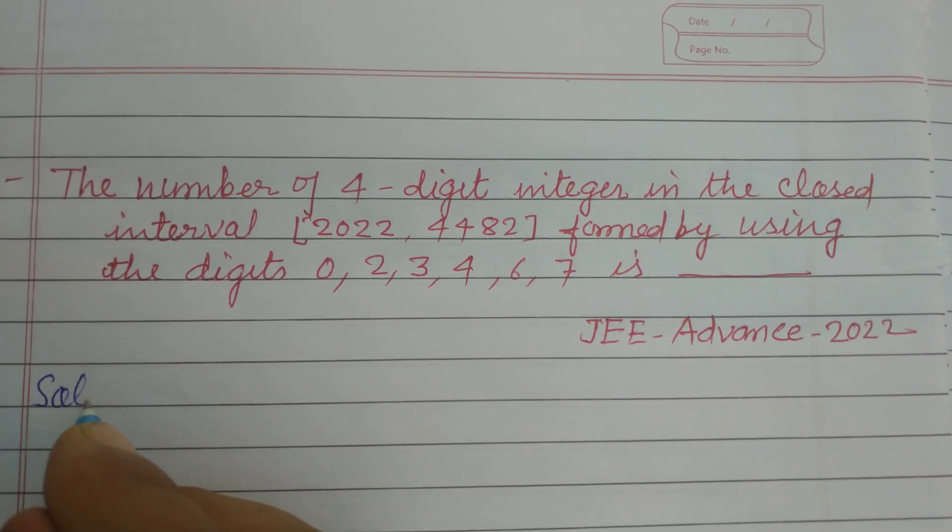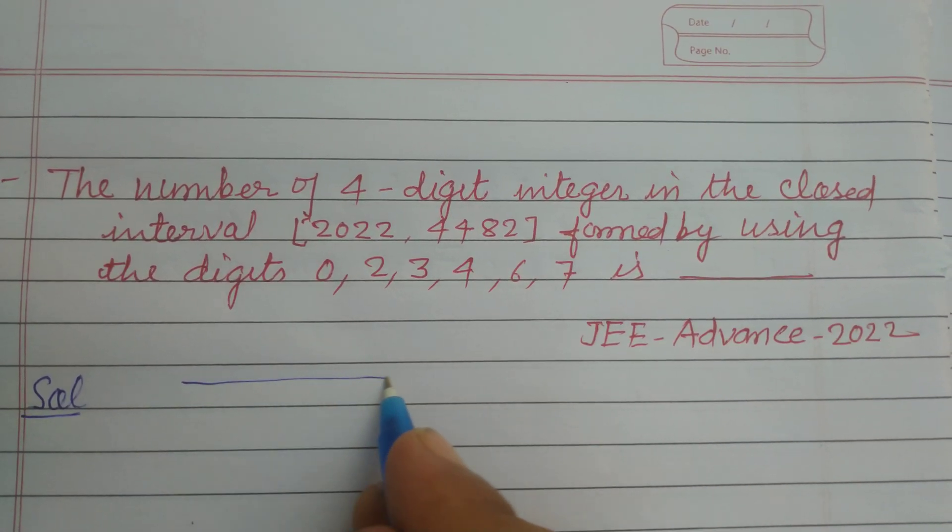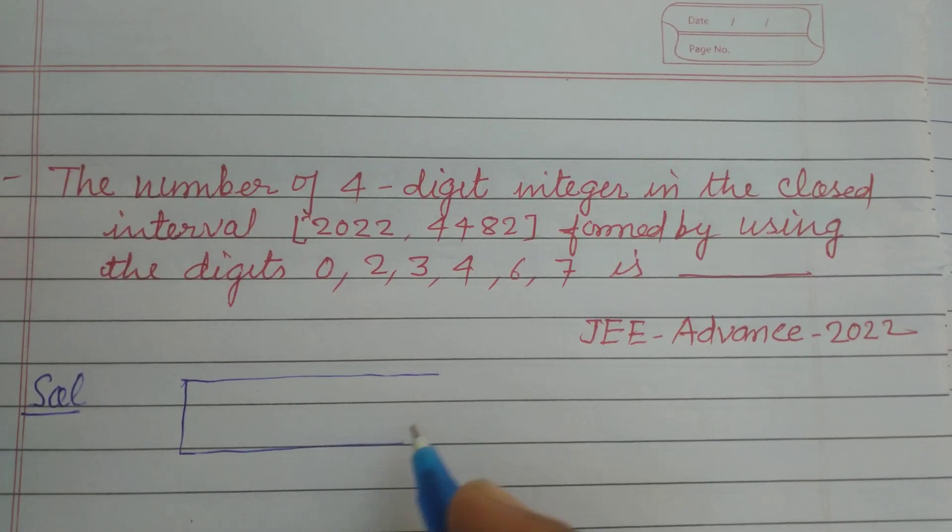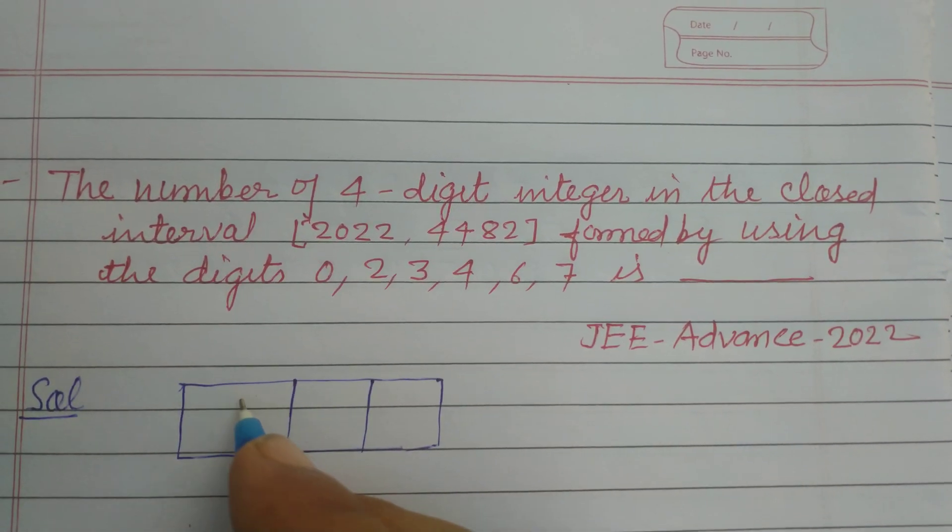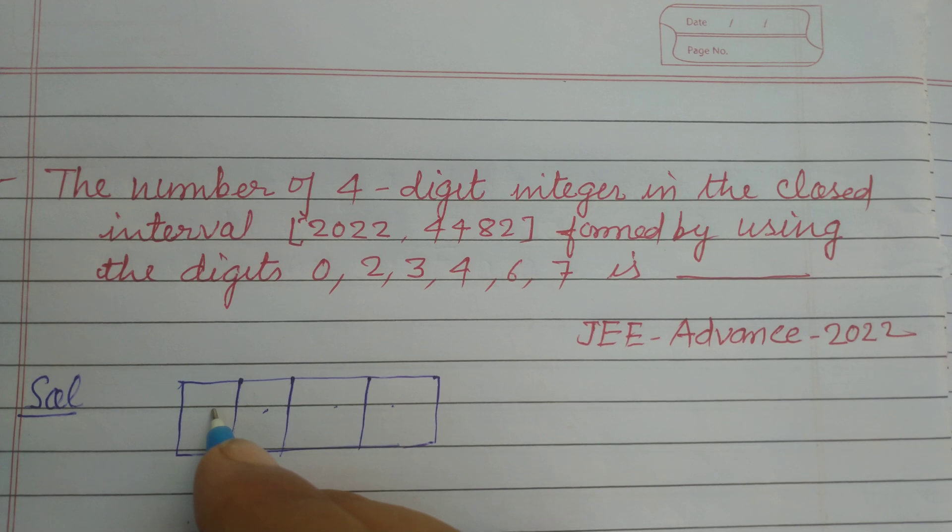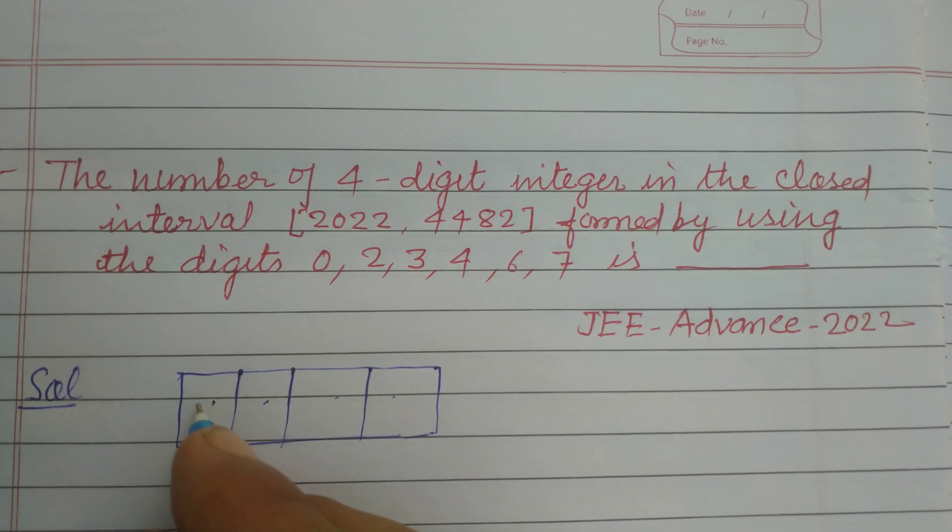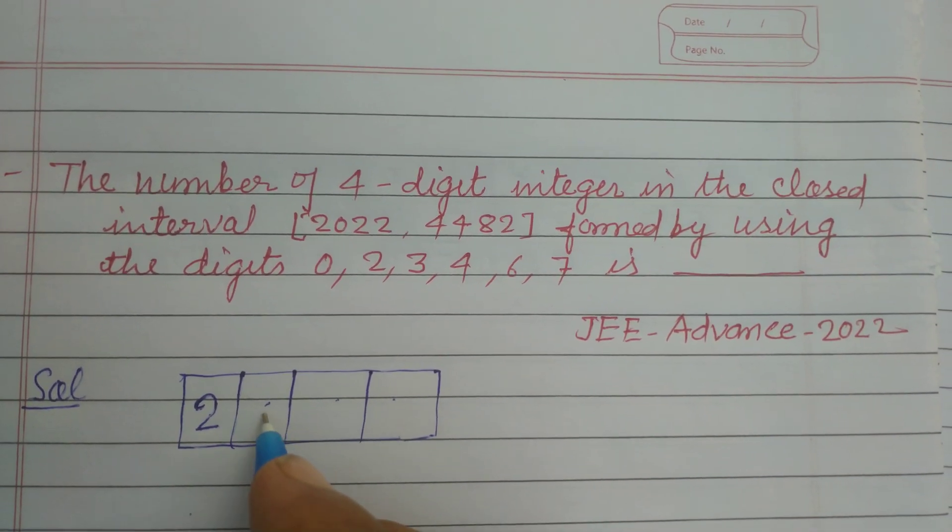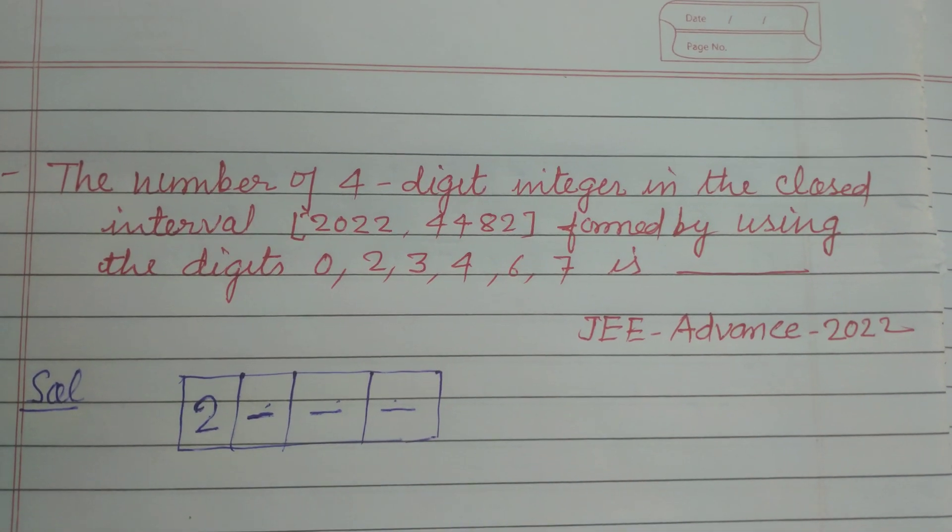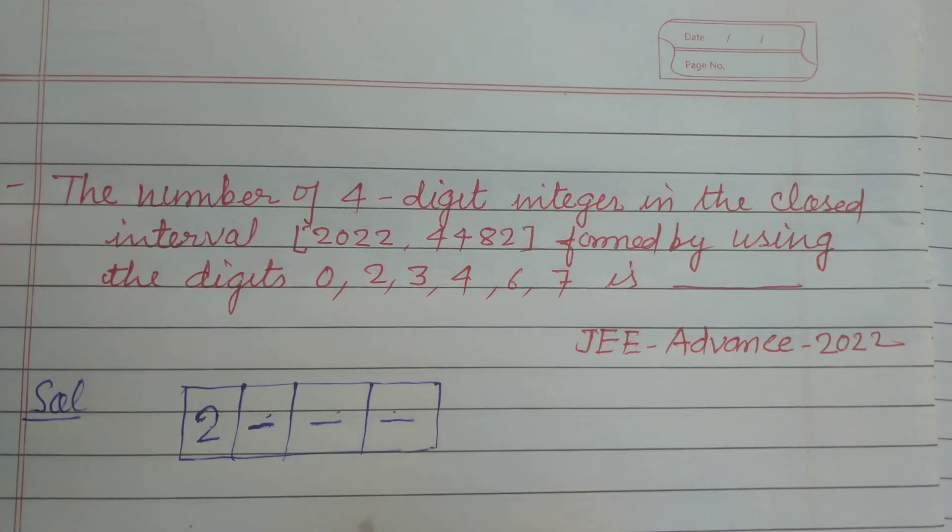formed by using the digits 0, 2, 3, 4, 6, 7 is. So student, for this we have 4 places, or we want to form a 4-digit number: 1, 10, 100, 1000 place. Here the number starts from 2000. So when we put here 2 at the 1000 place, we have 3 vacant places which can be filled by using these 6 digits.